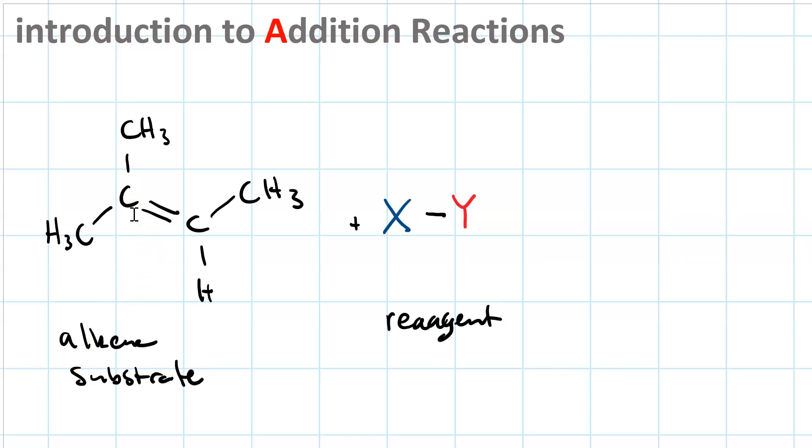So in an addition reaction, what happens is, in the substrate, each of the sp2 hybridized carbons has three sigma bonds and one pi bond. If we get rid of that pi bond, then each one needs a fourth bond and we'll replace it with the sigma bond to each component of the reagent.